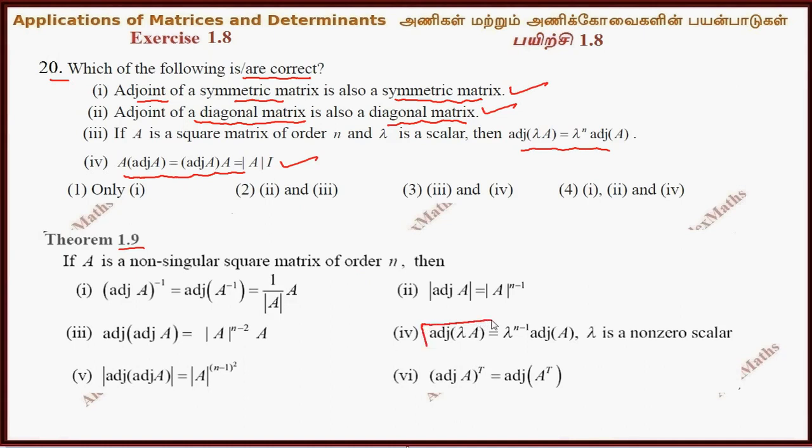Adjoint of lambda A, lambda power n minus 1 adjoint of A. But this is lambda power n, so this is true.